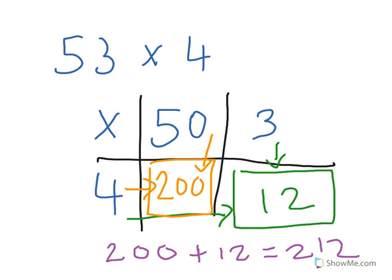To finish the sum, we take our two answers - 200 and 12 - and add them together. This gives the answer 212, so 53 times 4 equals 212.